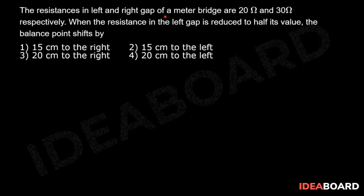The resistances in left and right gap of a meter bridge are 20 ohm and 30 ohm respectively. When the resistance in the left gap is reduced to half its value, the balance point shifts by.